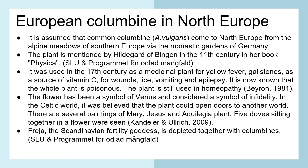It is assumed that the common Columbine came to North Europe from the Alpine meadows of Southern Europe via the monastic gardens of Germany. The plant is mentioned by Hildegard von Bingen in the 11th century in her book Physica. She was a nun in a convent who spoke a lot about using Triticum Spelta, or Dinkel, to heal people. Columbine was used in the 17th century as a medicinal plant for yellow fever, gallstones, as a source of vitamin C, for wounds, lice, vomiting and epilepsy. It is now known that the whole plant is poisonous.